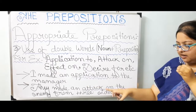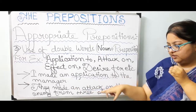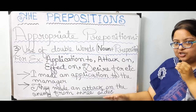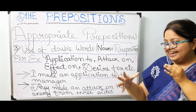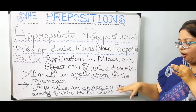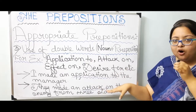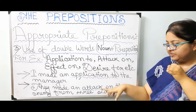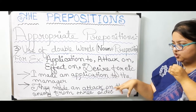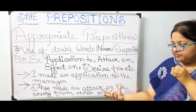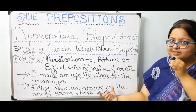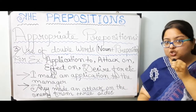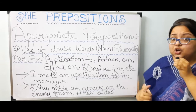Next: they made an attack on the enemy from three sides — basically a kind of military action. 'Attack on' — here the noun is placed, then 'on' is the word of preposition, forming a complex preposition as well as an appropriate one. So after 'attack', 'on' is the most suitable one which cannot be replaced.